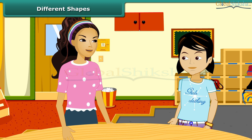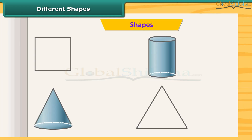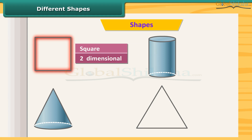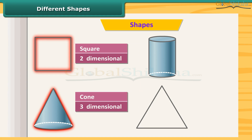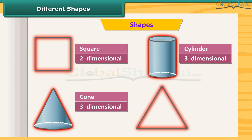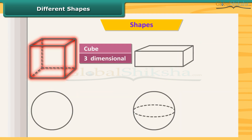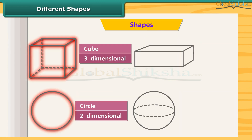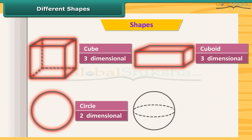You know about the two-dimensional and the three-dimensional shapes. I will show you some shapes and you will tell me their name and their type. This is a square — two-dimensional. This is a cone — three-dimensional. This is a cylinder — three-dimensional. This is a triangle — two-dimensional. Circle — two-dimensional. This is a cuboid — three-dimensional. And this is a sphere — three-dimensional.